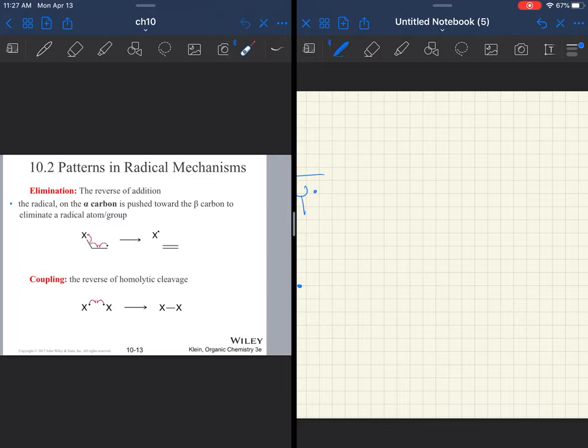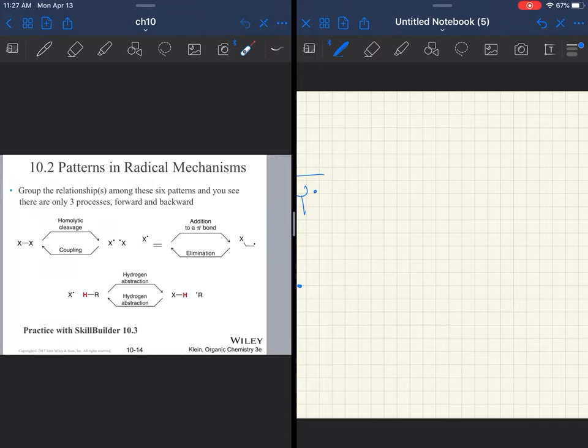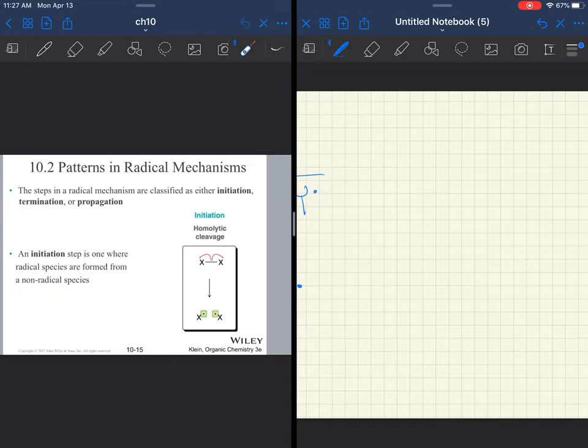And then there's a coupling reaction. This is a terminating step where your radicals come together, and then there are no radicals at the end. So this can be done with halogens. This can be done with any kind of radical. So if that was quick, don't worry. We're going to go through specific steps a little bit more slowly.